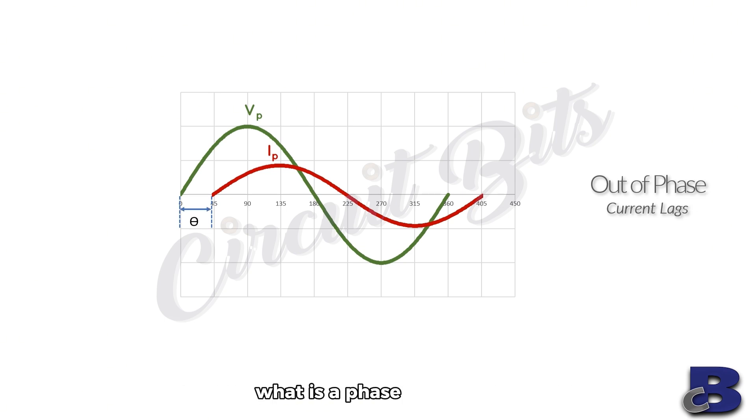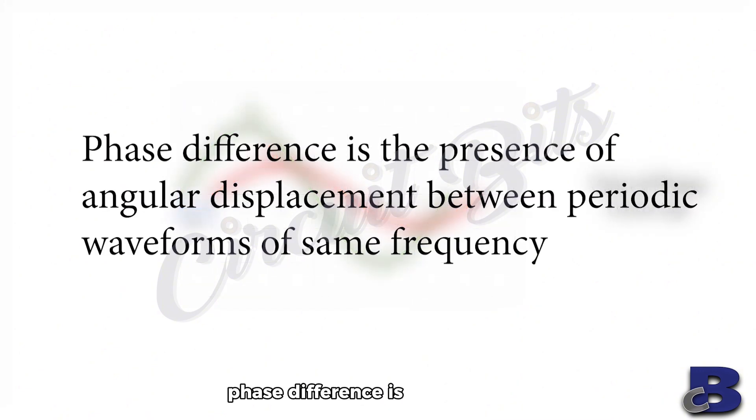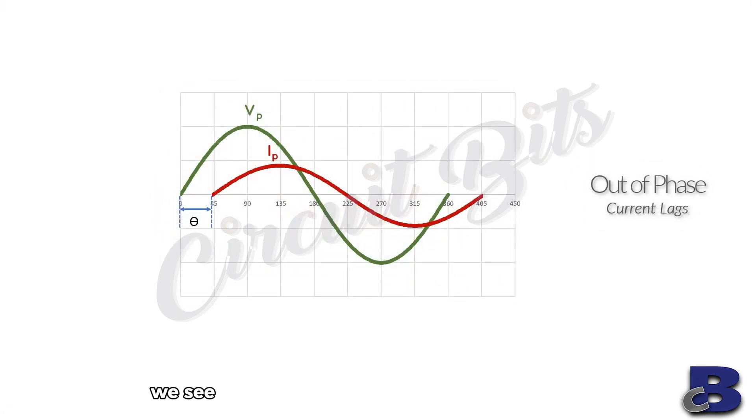What is a phase difference? Phase difference is the presence of angular displacements between periodic waves of same frequency. We see even if these waves have same frequency, they start and finish at different times. They cross the zero line at different times and reach their maximum values at different times.